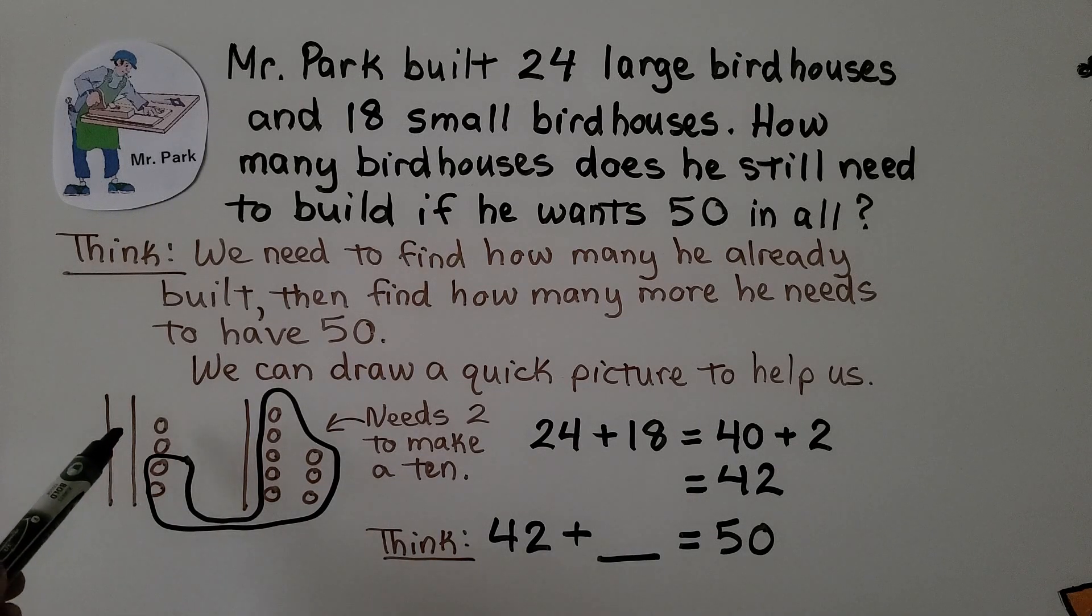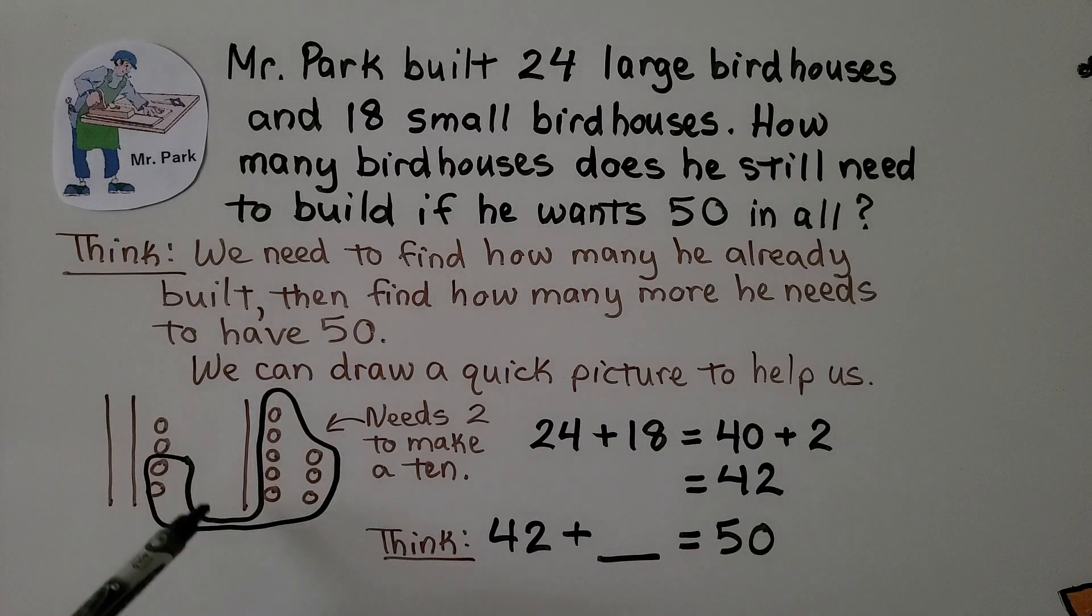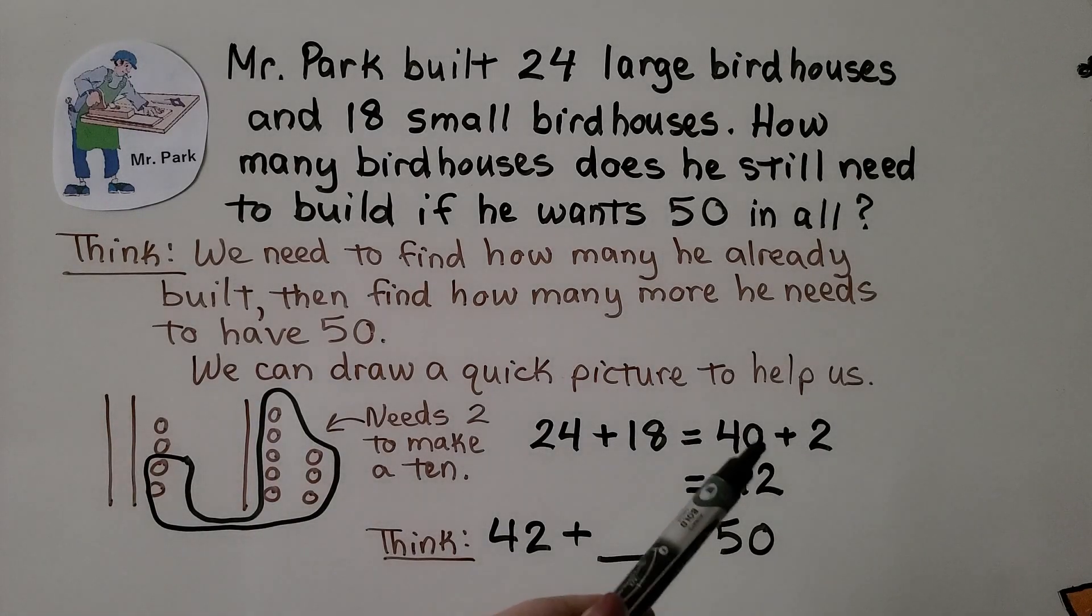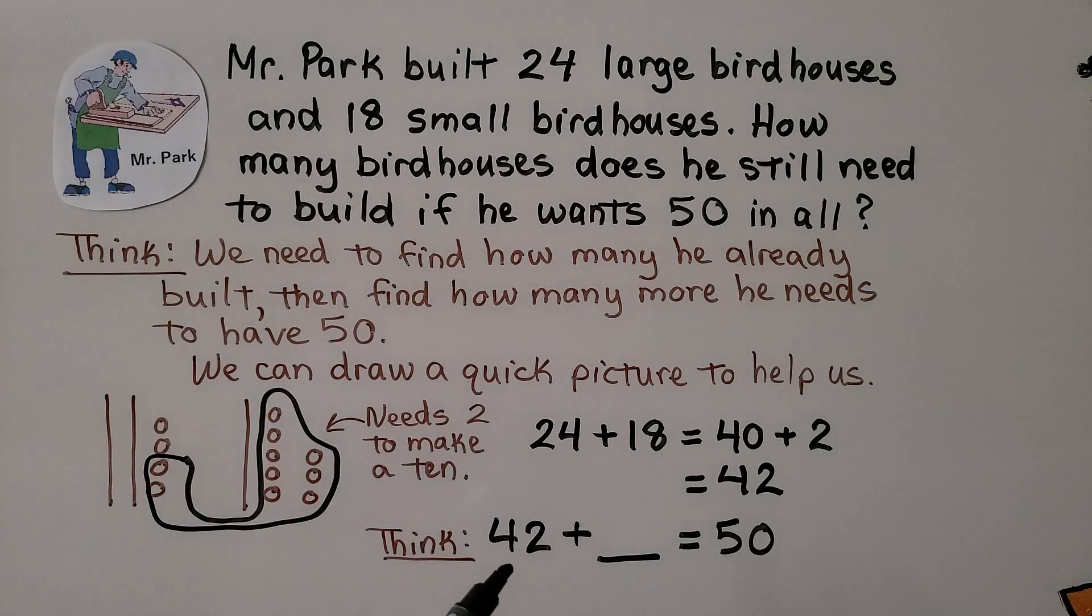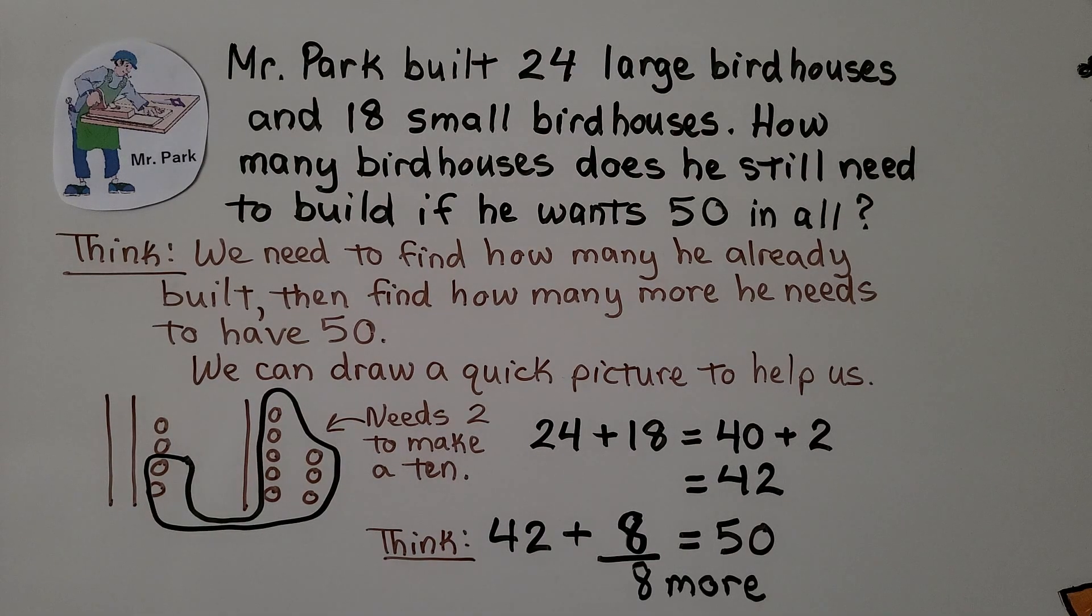We can take two of the ones from here and group them with the eight to make another ten. Now we have one, two, three, four tens, two ones. That's 40 plus two. That's 42. He wants 50 in all. So we think 42 plus some number is equal to 50. What would this two need to make a ten? So that four would be another ten. It would be five tens. Do you know what two would need to make a ten? If you said eight, you're right. 42 plus eight is equal to 50. That means Mr. Park needs to build eight more.